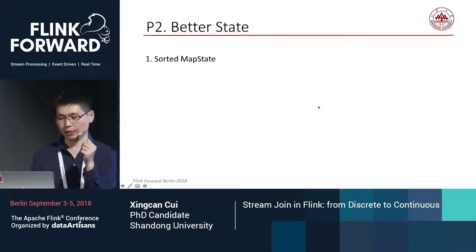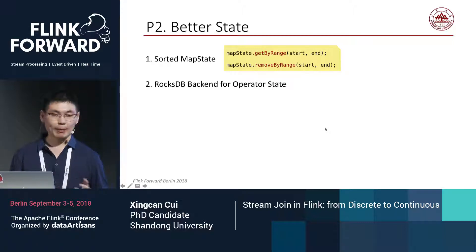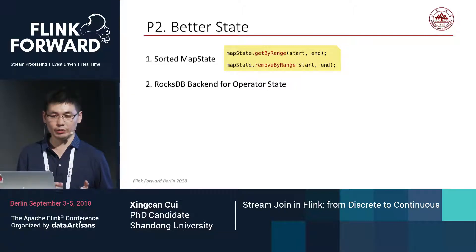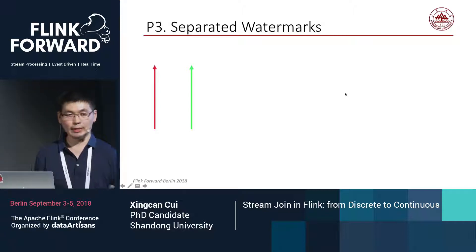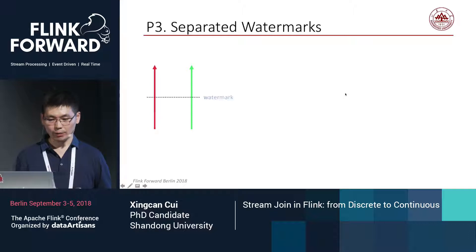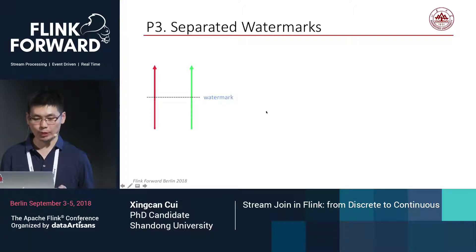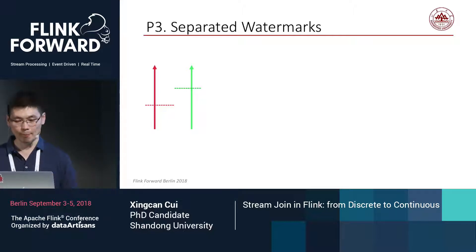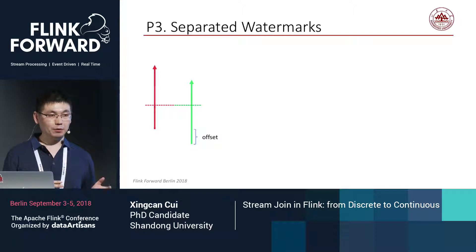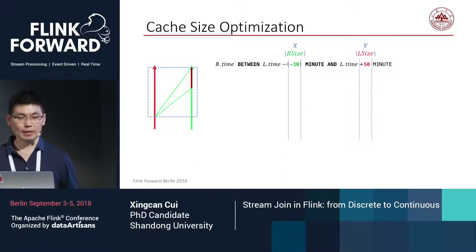My second proposal is about better state support. We especially need a sorted map state to manipulate the cache in a more efficient way. We could also try to enable the RocksDB backend for operator state, which I think is essential to implement a theta join. My third proposal is to support separated watermarks for connected streams. Currently, watermarks for the two streams are forcibly synchronized. Separating watermarks would make it possible to track the two streams asynchronously — like adding an offset between them.